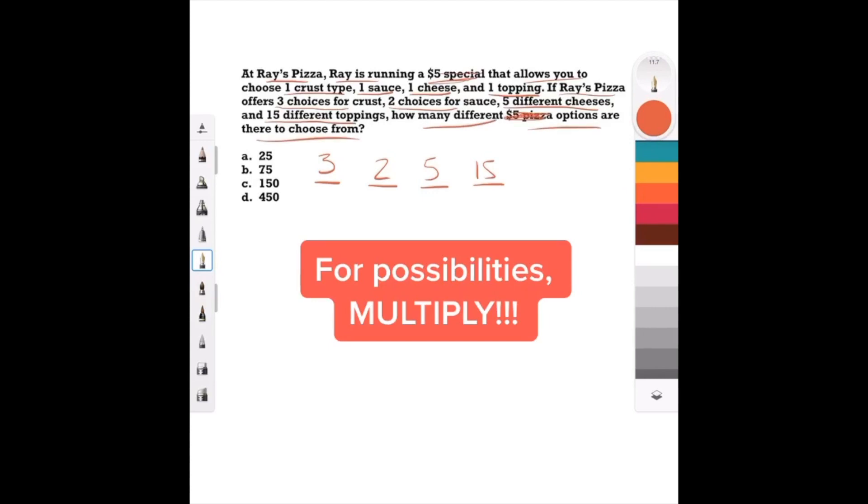So the cost is totally irrelevant. And when you want to figure out a total number of possibilities, you just multiply. So when you do three times two times five times 15, you get 450. Answer choice D.